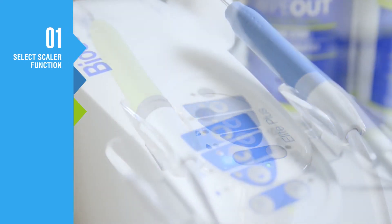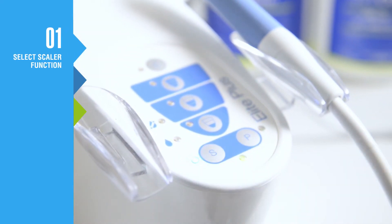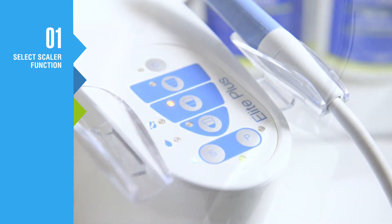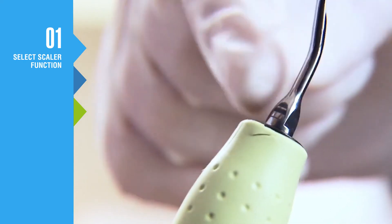With the unit in standby mode, press the S button to enter scaler mode. Select the working mode, one, two, or three, that matches the number on the base of your selected scaler tip.